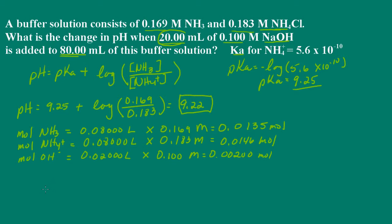Let's write out our equation. We have ammonium ion that's going to react with the added base. The acid will react with the added base, and the base — in this case ammonia — would react with any added acid. So we have: ammonium plus hydroxide ion produces ammonia plus water.